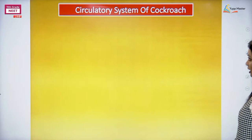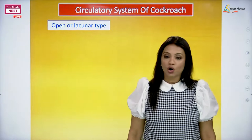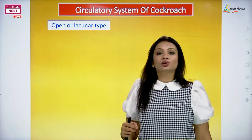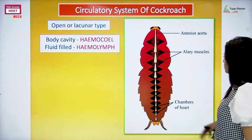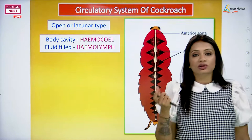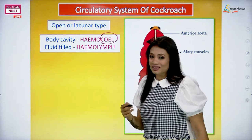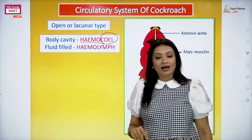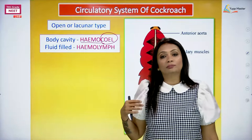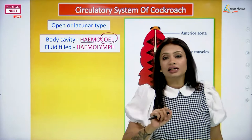Shall we begin talking about this circulatory system? As I told you, it is an arthropod and all arthropods have an open, or lacunar, type of circulatory system. The whole body cavity of the cockroach is called the hemocoel. The body fluid filling that whole body cavity is going to be called hemolymph.